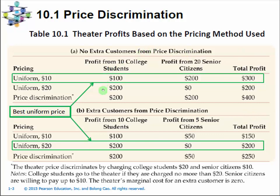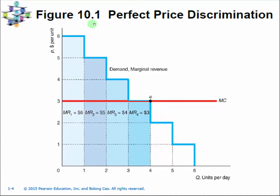Let me summarize: there are two sources that contribute to improved profit after a firm can price discriminate. One is to charge the high-willingness-to-pay group the higher price, transferring consumer surplus to the firm with monopoly power. The second source is that charging a lower price to the low-willingness-to-pay group generates additional revenue — and to make that profitable, you need zero or very low marginal cost.